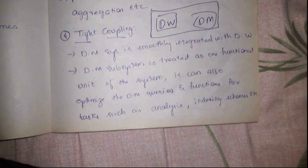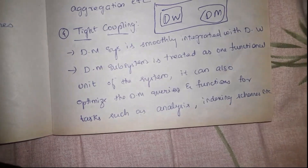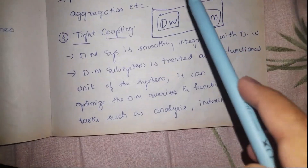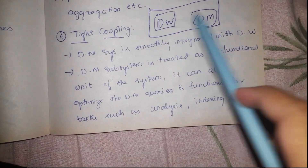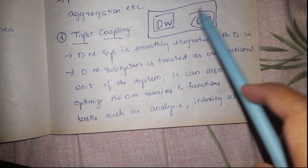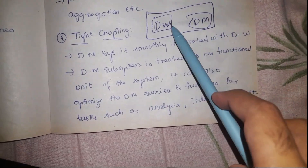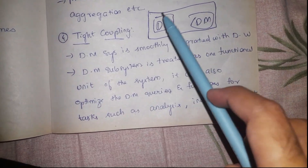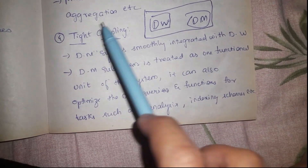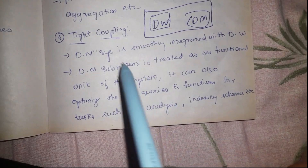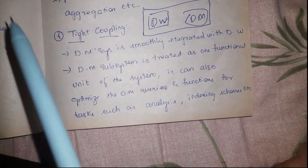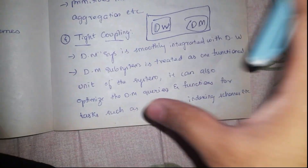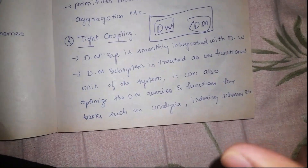In tight coupling, it can optimize queries and functions. The data warehouse may have some query and functional processing tools, and the data mining system can easily utilize all these tools and functionalities. Based on tight coupling, we can say that the data mining system has been completely integrated with the data warehouse.